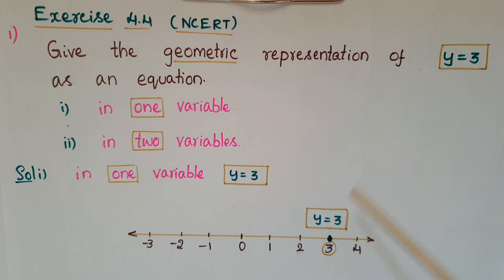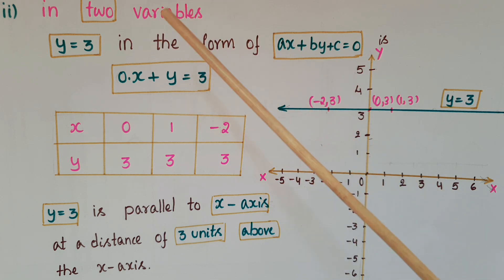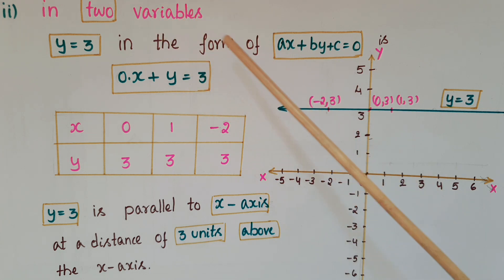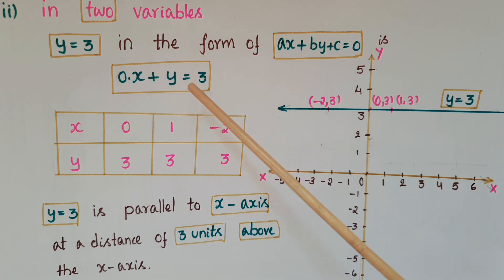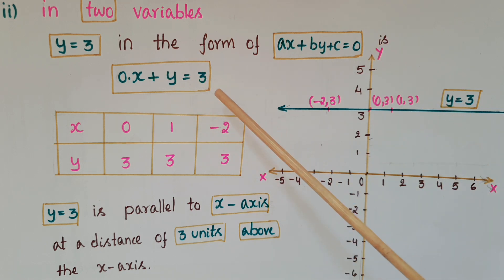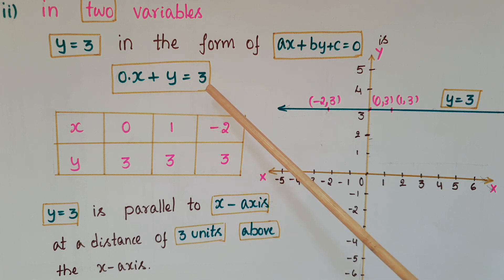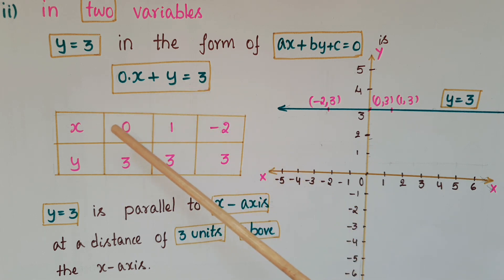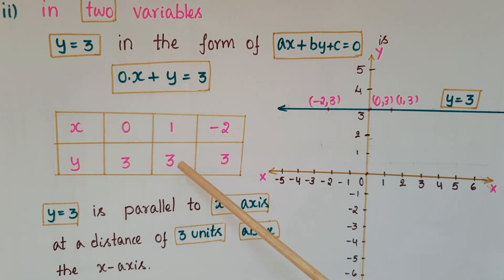Now we have to represent y equals 3 in two variables, that is in the form of ax plus by plus c equals 0 — which becomes 0 times x plus y equals 3. We need a minimum of two solutions to draw this linear equation in two variables on the graph. If x is 0 then y is 3; if x is 1, y is 3.